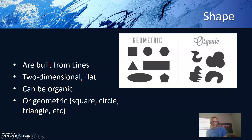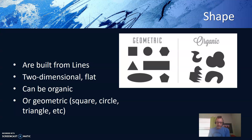Shape. Shapes are built from lines. They are two-dimensional and flat. They can be organic or geometric, and have a name, such as square, circle, triangle, and others.